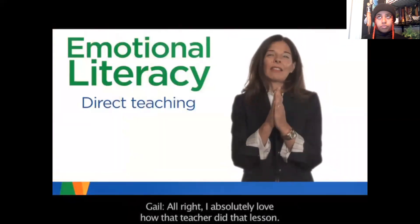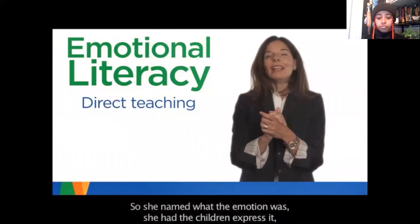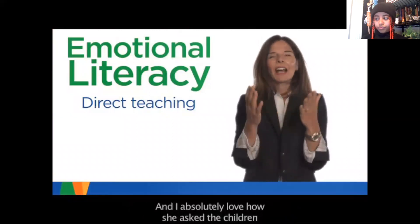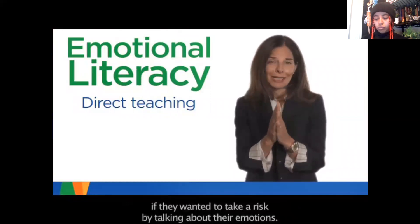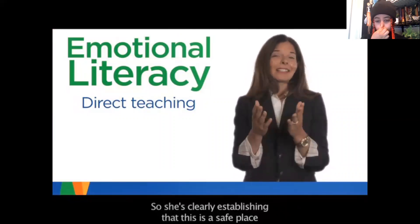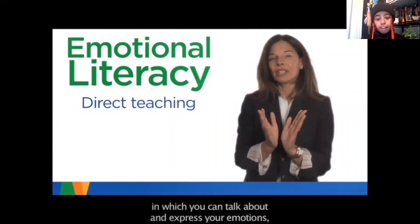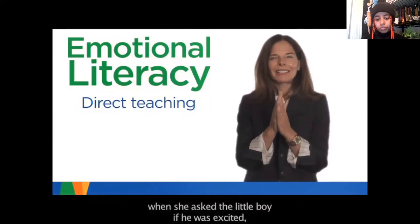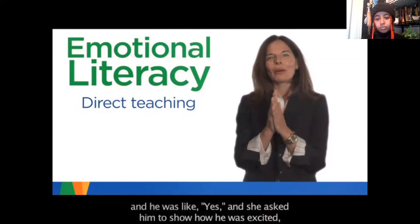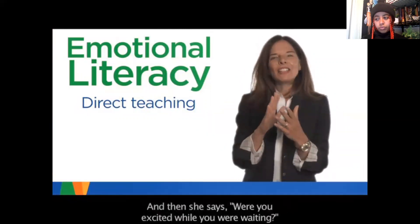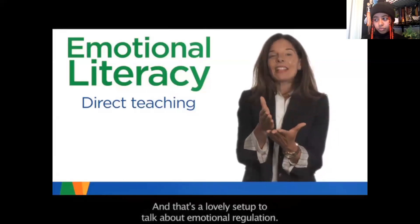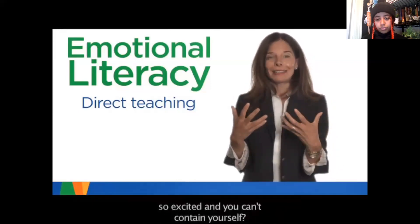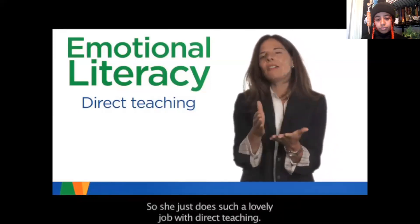The teacher did a few great things in that lesson: she named the emotion, had the children express it on their faces, and asked about a time they felt that way. She also asked children if they wanted to 'take a risk' by talking about their emotions, clearly establishing a safe place to express feelings — which is key to an emotionally literate classroom. And when she asked the boy if he was excited while waiting, that was a lovely setup to talk about emotional regulation: what do you do when you're so excited you can't contain yourself?